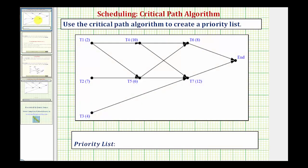Looking at our digraph, the completion times for each task are in parentheses — let's assume they're in hours. We're looking for the longest path in the digraph, which will be our critical path. Notice how if we start at task one and go from task one to task four, to task six to the end, that would take two plus ten plus eight, or 20 hours.